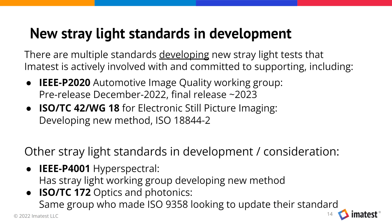There are new developing standards — still largely in development. Imitest is actively involved and committed to supporting standards. These include IEEE P2020, an automotive image quality standard currently in pre-release, with an initial release expected sometime in 2023. ISO 18844 is also developing a new method very similar to the IEEE P2020 method. There's also a China standard, IEEE P4001 for hyperspectral imaging, and the ISO TC 172 group — who made the ISO 9358 optics-only test — is looking to update their standard. There's a lot of community development around this test method.